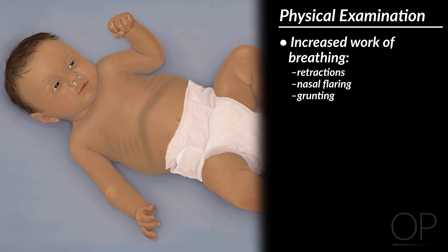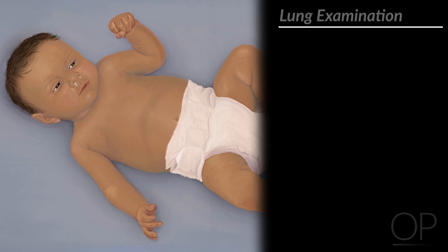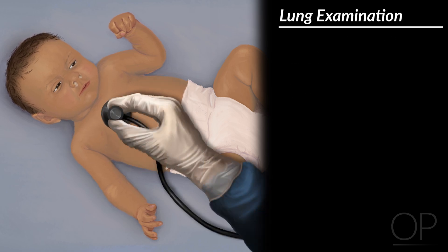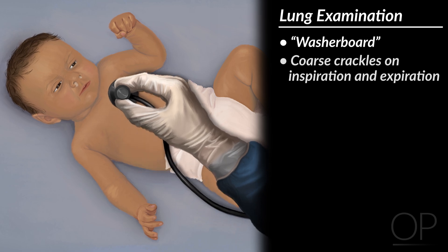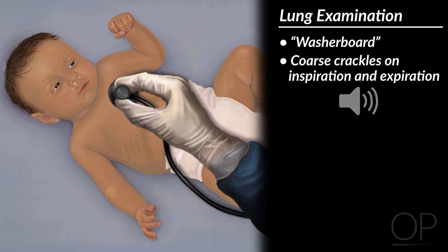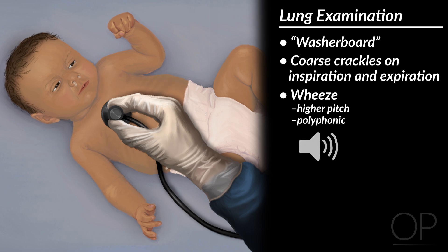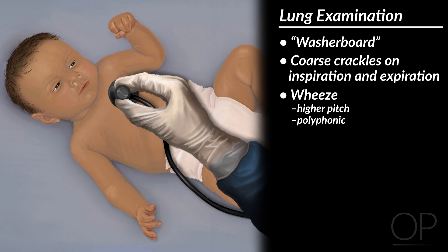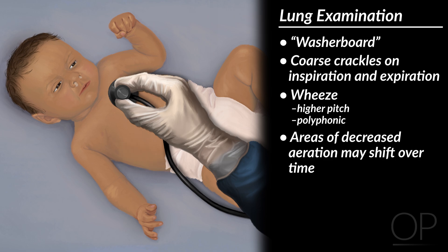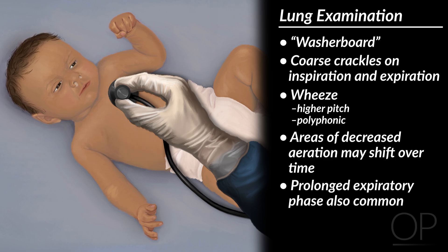Although you have yet to auscultate her lungs, you have already gathered some of the most important information about her clinical status just by observation. The classic description of the lung exam of a baby with bronchiolitis is sounding like a washboard, with coarse crackles heard on inspiration and expiration. Babies will frequently have associated wheeze, which is higher-pitched and polyphonic. Note whether there are specific areas where breath sounds are diminished. Because areas of mucus plugging can shift with cough, the areas of decreased aeration may shift over time. Prolonged expiratory phase is also common.